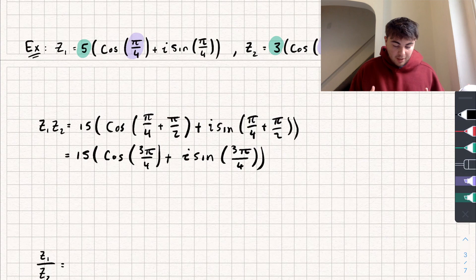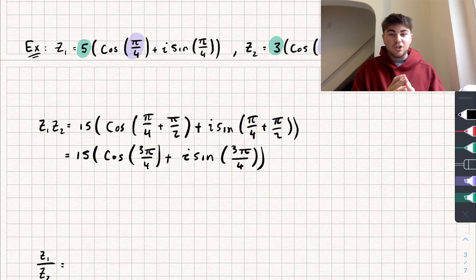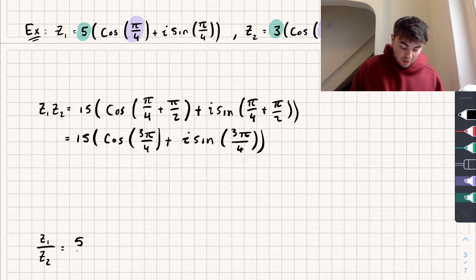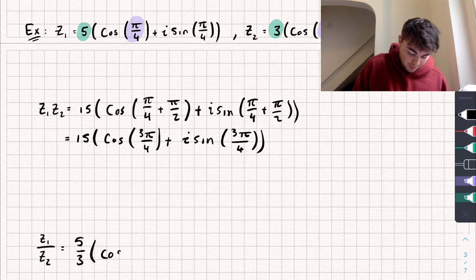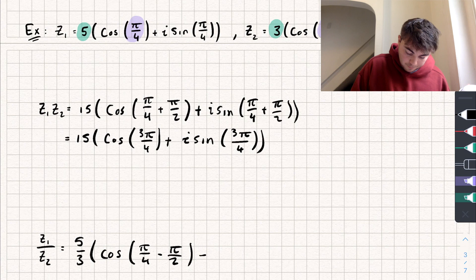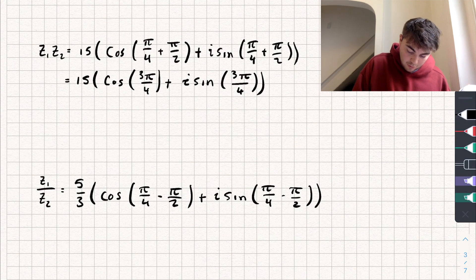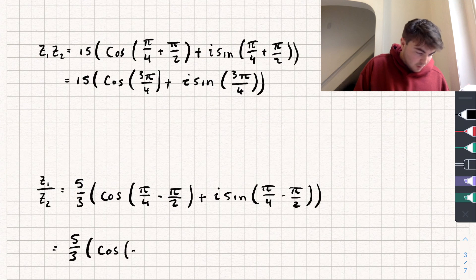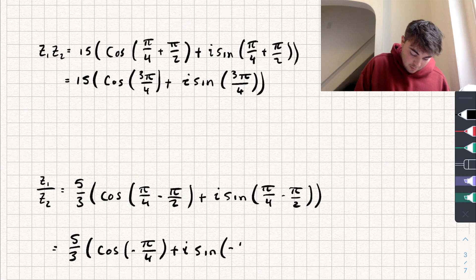Now let's look at the division example. Remember, we divide the moduli and subtract the arguments. So we get five over three times (cos(pi/4 − pi/2) + i·sin(pi/4 − pi/2)), which equals five over three times (cos(−pi/4) + i·sin(−pi/4)). That is our answer.